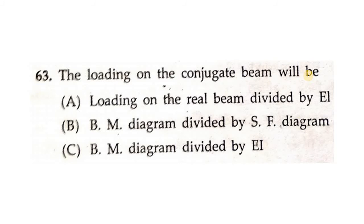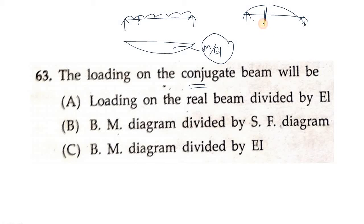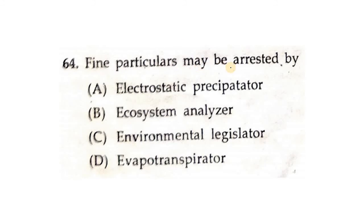The loading on the conjugate beam will be—in the conjugate beam method, if this is your simply supported beam, first we find the M by EI diagram. Then to find slope or deflection at any point, we produce some conjugate beam and apply this M by EI diagram on that. Then we find shear force or bending moment corresponding to slope or deflection respectively. So loading on the conjugate beam will be bending moment diagram divided by EI. C is correct.